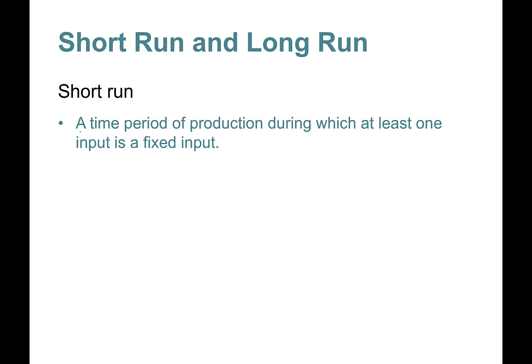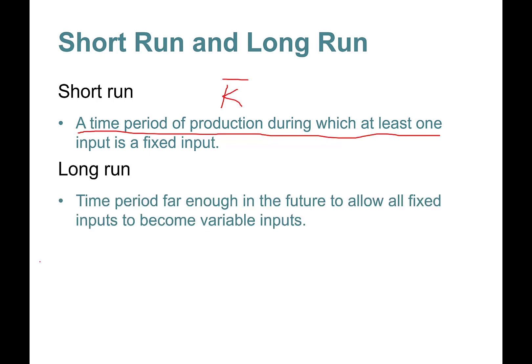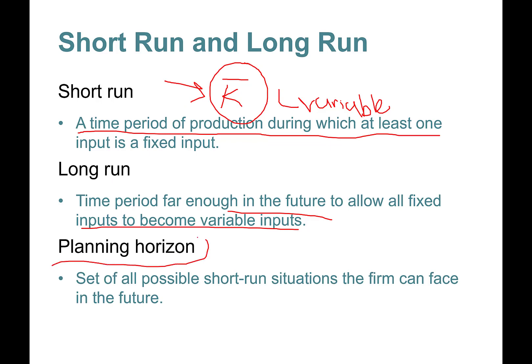Short run is a time period of production during which at least one input is fixed. Capital is considered fixed, therefore we put a bar on top. Long run is a period of time far enough in the future that allows all fixed inputs to become variable. In the long run, everything is variable. In the short run, labor is variable, however capital is fixed. Planning horizon is the set of all possible short run situations the firm can face in the future.